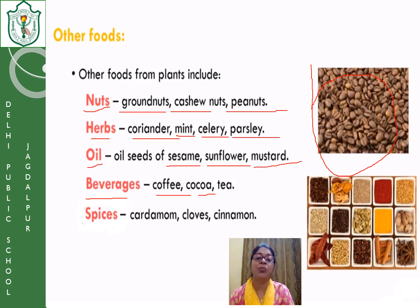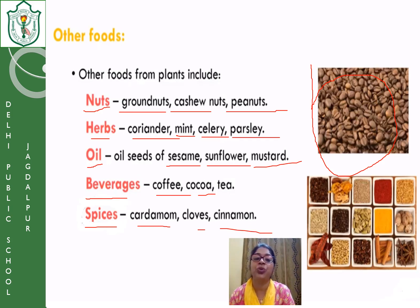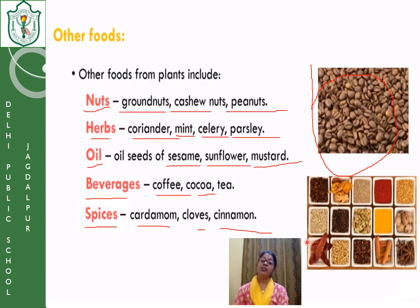The next important thing plants give us is spices. If you have observed cooking at home, your mother or grandmother adds a number of things while cooking — those are spices like cardamom, cloves, and cinnamon. You can see the picture showing different types of spices: cloves, jeera, chili, elaichi, and many others. These spices not only add flavor or taste to your food item, but they also have nutritive value.